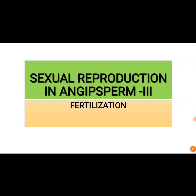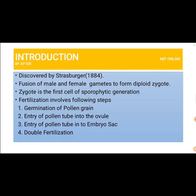Welcome to the online botany classes. Today we are going to discuss the last part of the sexual reproduction process in angiosperms, that is fertilization. In the previous two sections we had discussed the development of male gametophyte and female gametophyte. The concept of fertilization was first discovered by Strasberger in 1884.